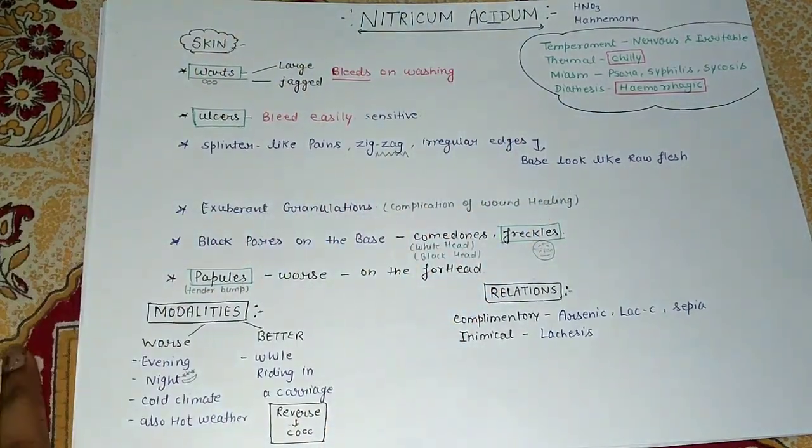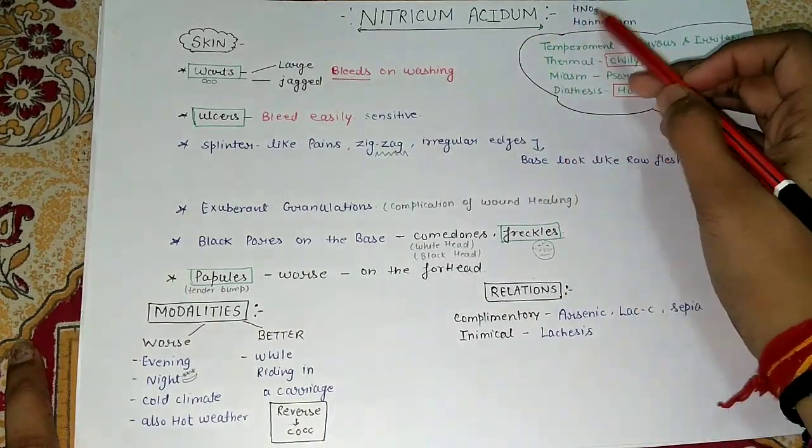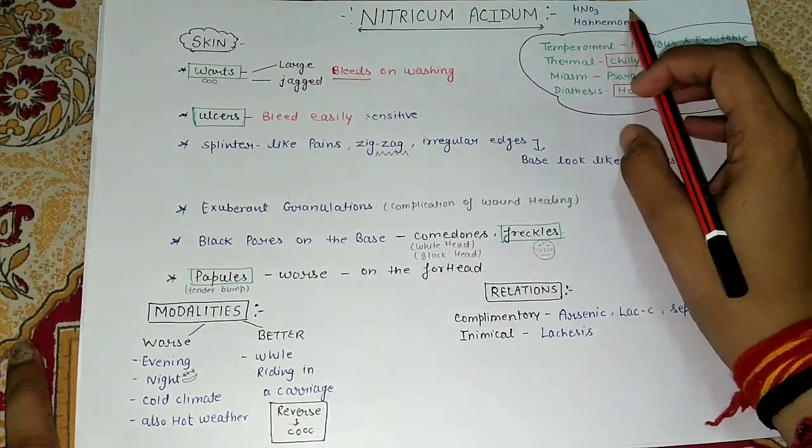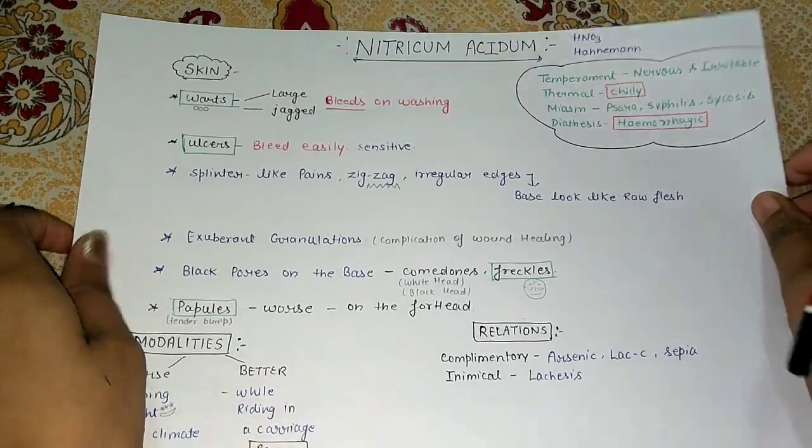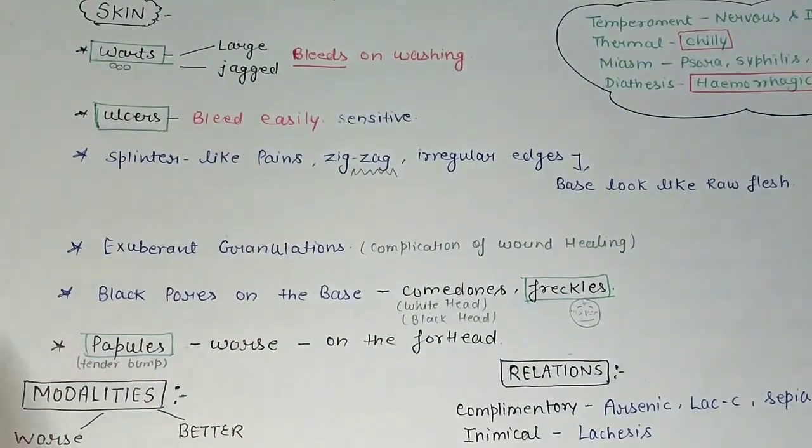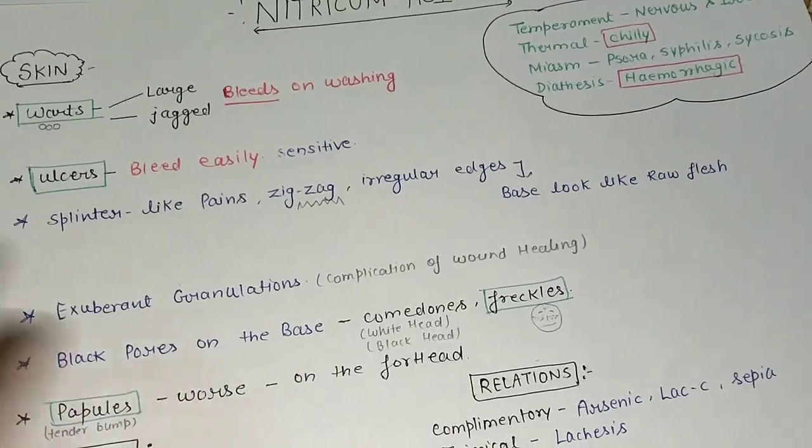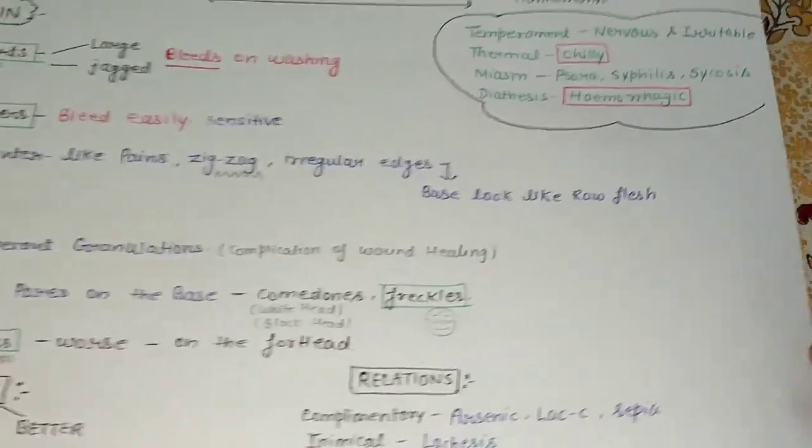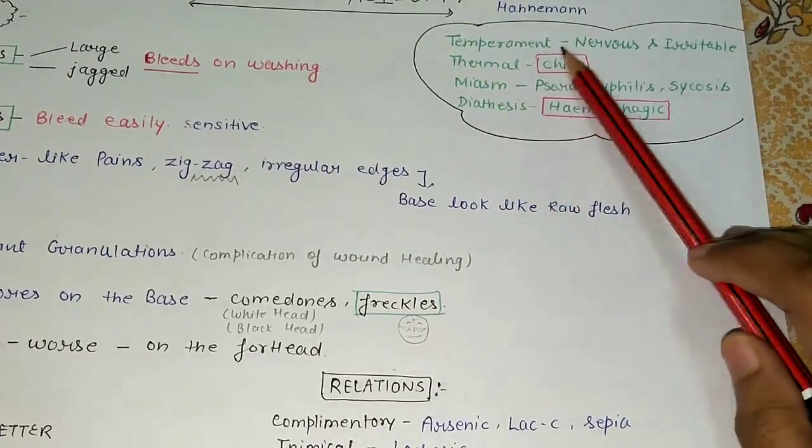We call Nitric Acid HNO3. It is proved by Hahnemann. The temperament of Nitric Acid is nervous and irritable.